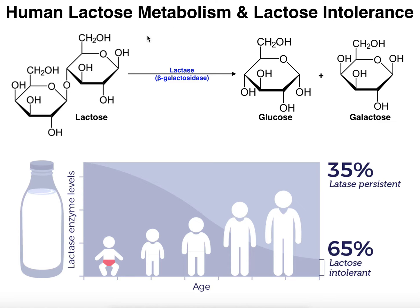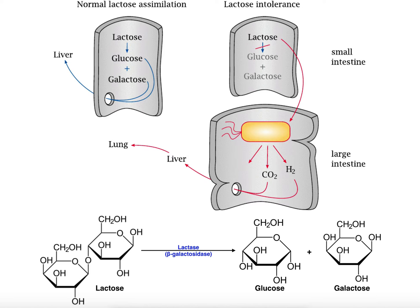Now let's look at what's called normal lactose assimilation — what we'd see in infants and in adults who still possess the lactase enzyme. Lactose is metabolized by lactase into glucose and galactose in the brush border of the small intestine. Both of these monosaccharides would then be exported to the liver where they would be metabolized further or distributed to the rest of the body. That's normal lactose assimilation if you have the lactase enzyme.